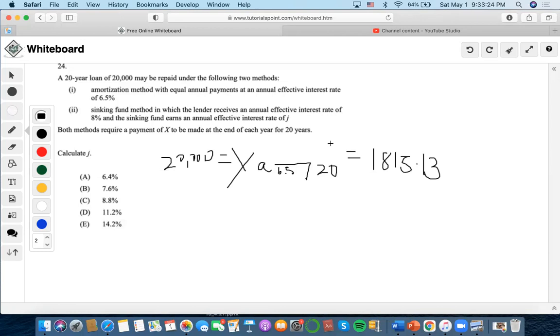Now for this problem, the second part is the sinking fund method in which the lender receives an annual effective interest rate of 8%. So we've spoken about this before. We had an earlier problem talking about sinking funds, and it's a future value concept, right?